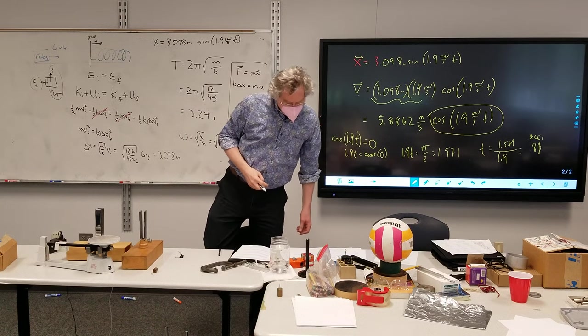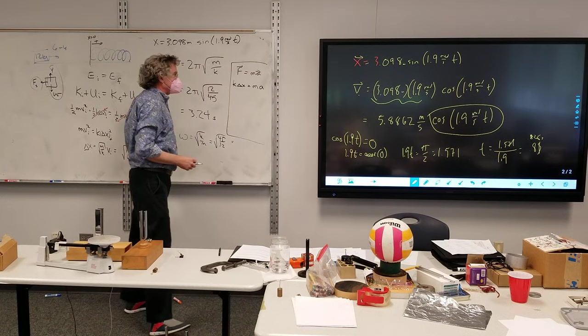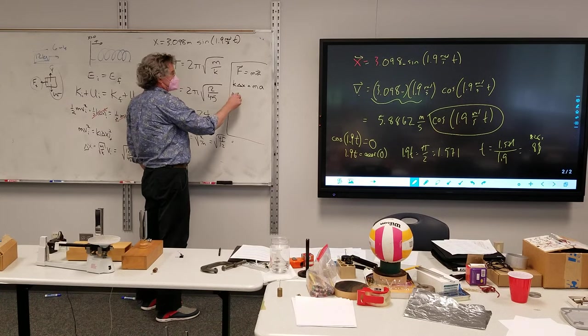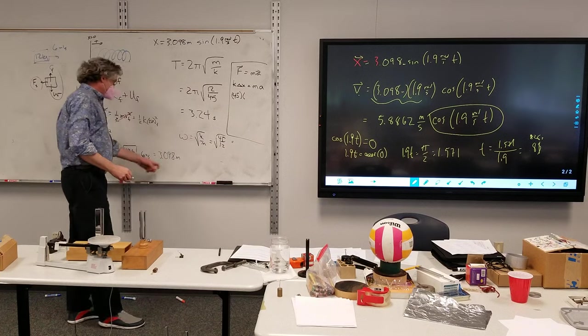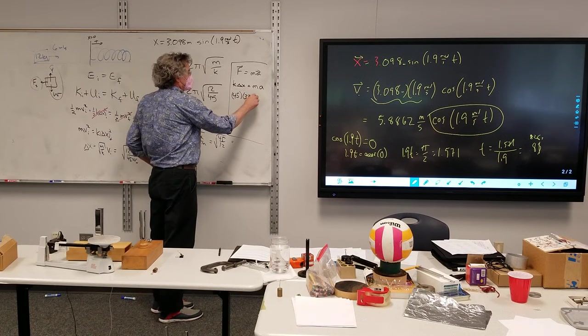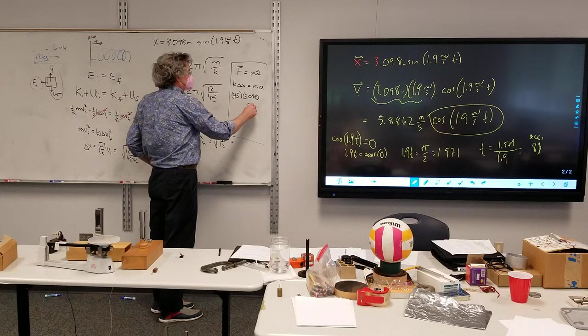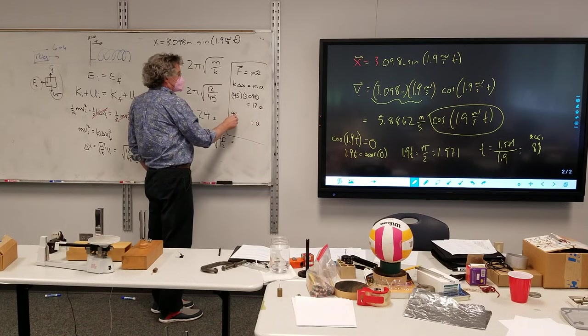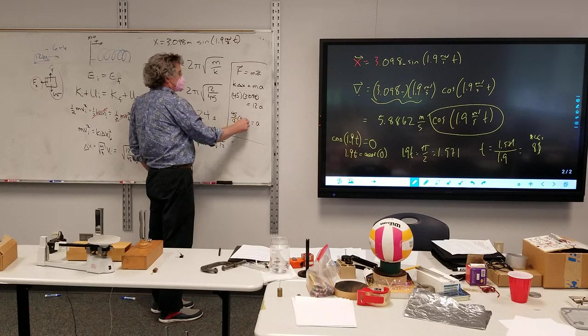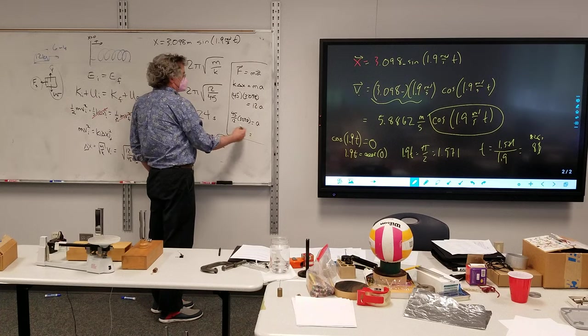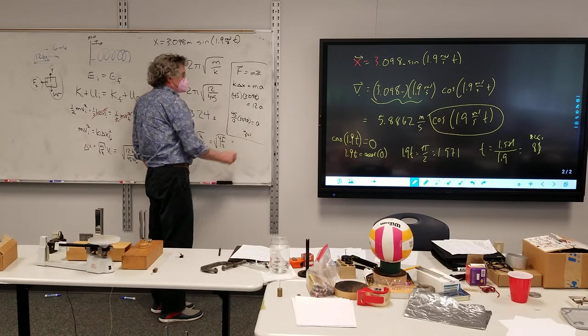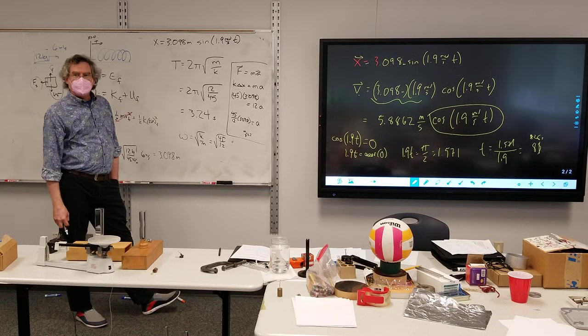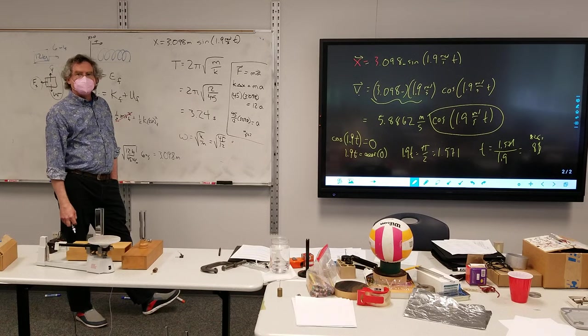Specifying magnitude of acceleration, so I don't have to worry about pluses and minuses. So I get 45 times 3.098 is equal to 12 times A. So the magnitude of my acceleration will be 45 over 12 times 3.098. Eleven point something. Eleven point one eight.